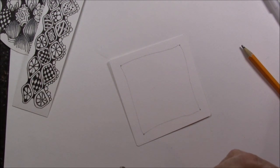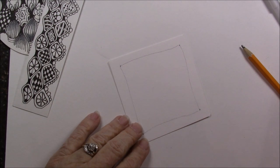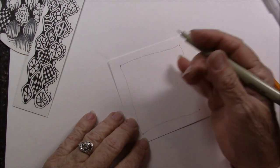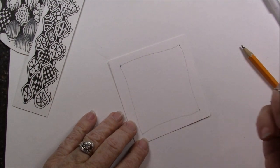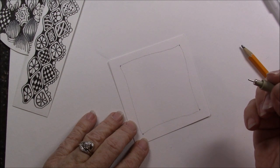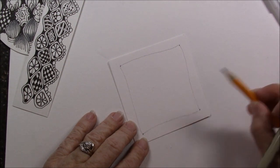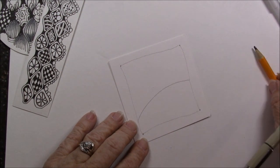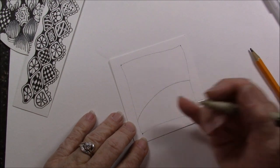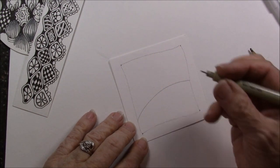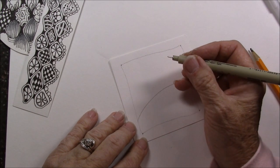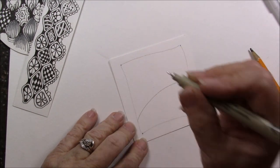Then we'll do our dots, borders, and then we could do a string in the center. But instead, I'm just going to fill this with Glace. I'm really teaching you the pattern and how it's done. I think I will just do a little half string in there.